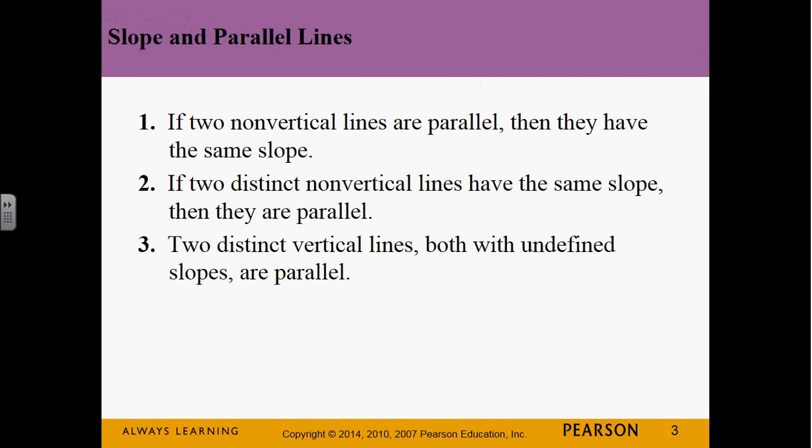First thing, parallel lines. If two non-vertical lines are parallel, then they have the same slope. So you've got two parallel lines. As long as they're not vertical, that guarantees, since they're parallel, that they have the same slope. Flip that around and say if two lines have the same slope, they're parallel. This is an if and only if statement. It goes both ways. If they're parallel, they have the same slope. If they have the same slope, they're parallel.